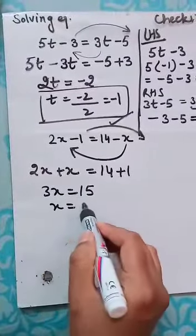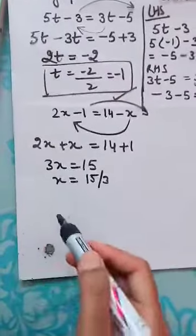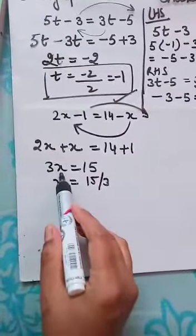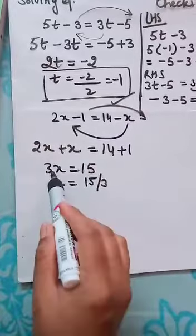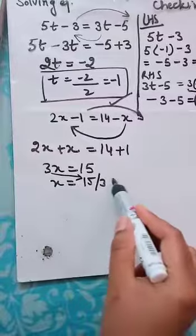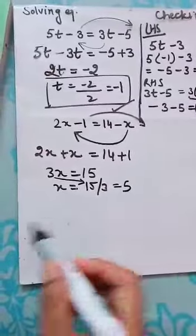So x is equal to 15 divided by 3. Why divide here? Because 3 and x are multiplied. So the other side it becomes divide. Or the other way, we can bring it down. 15 divided by 3. The answer is 5.